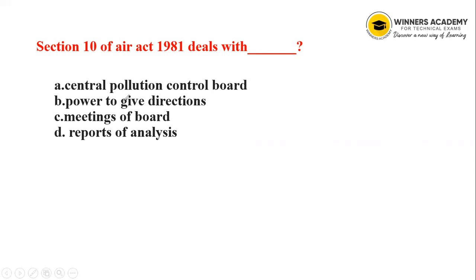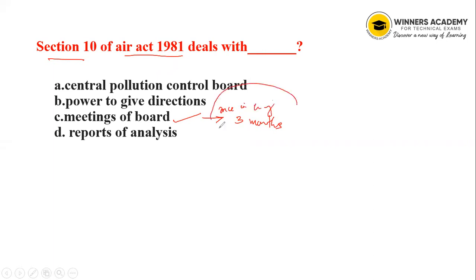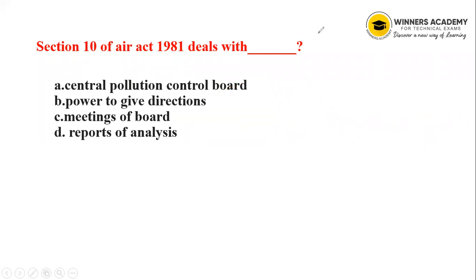What is Section 10? Section 10 of the 1981 Air Act deals with meetings of the board. The board must meet once every 3 months. Minutes of the meeting are discussed and sent to the State Government or CPCB. All these sections are covered in the same way. Thank you.